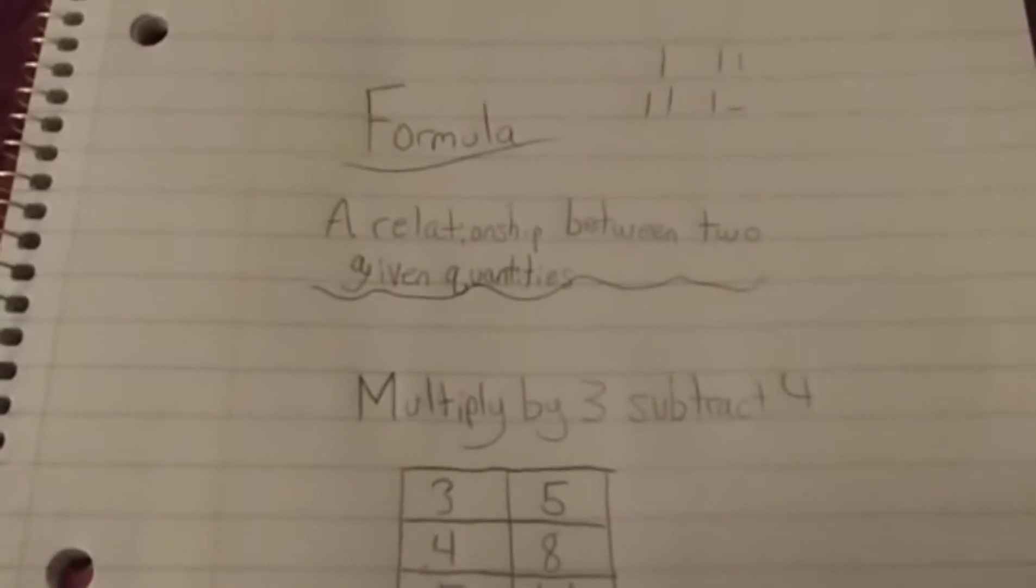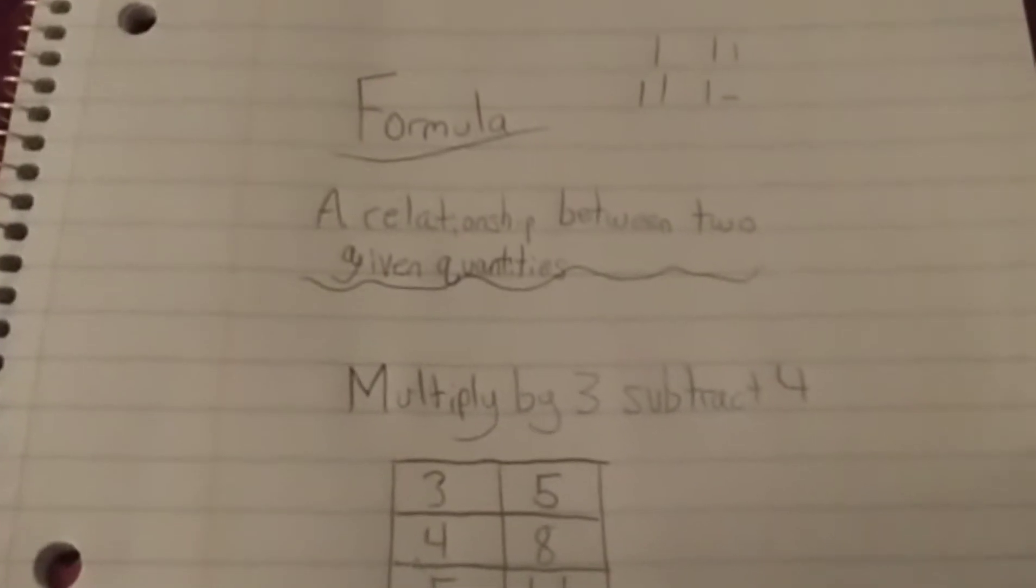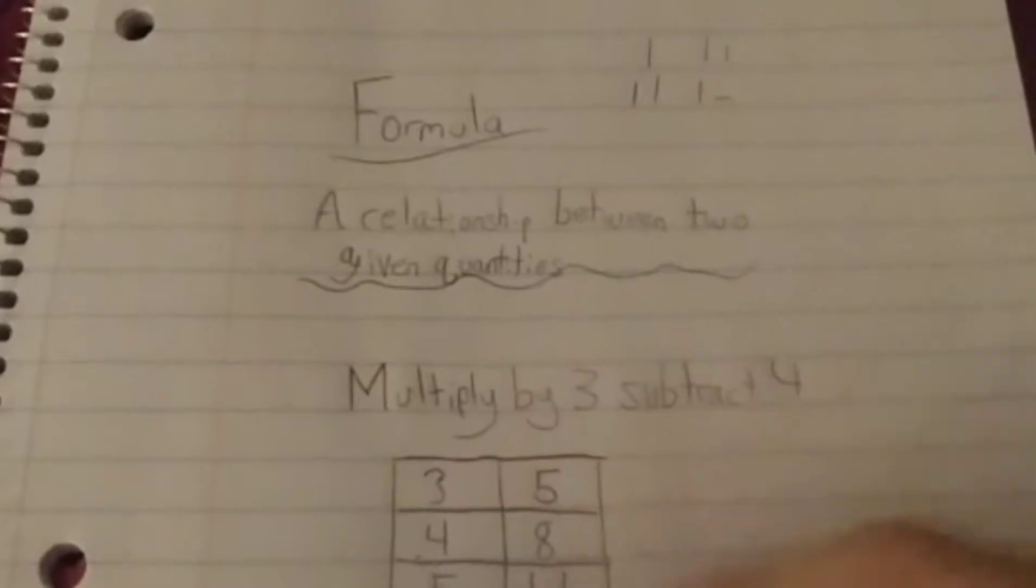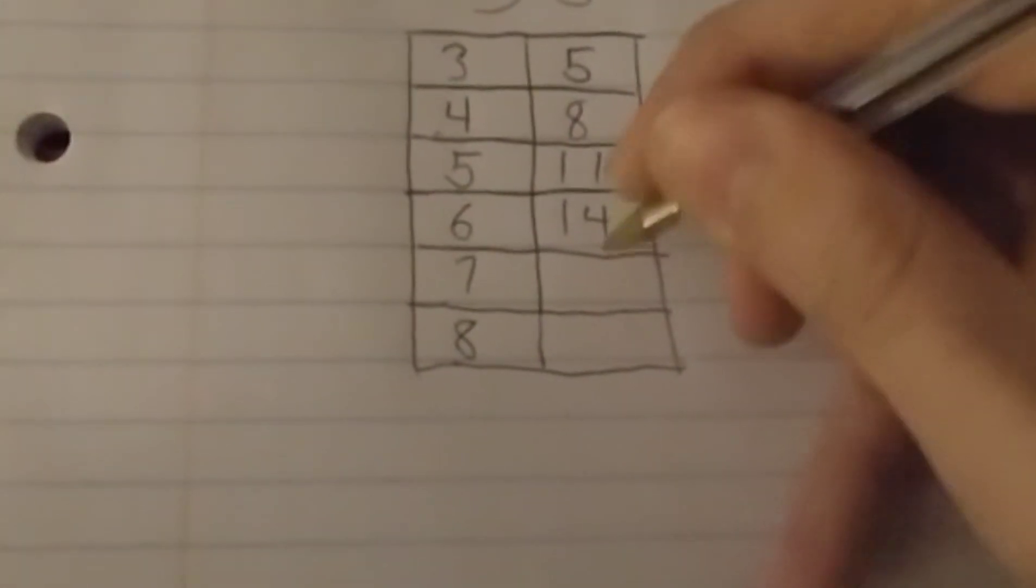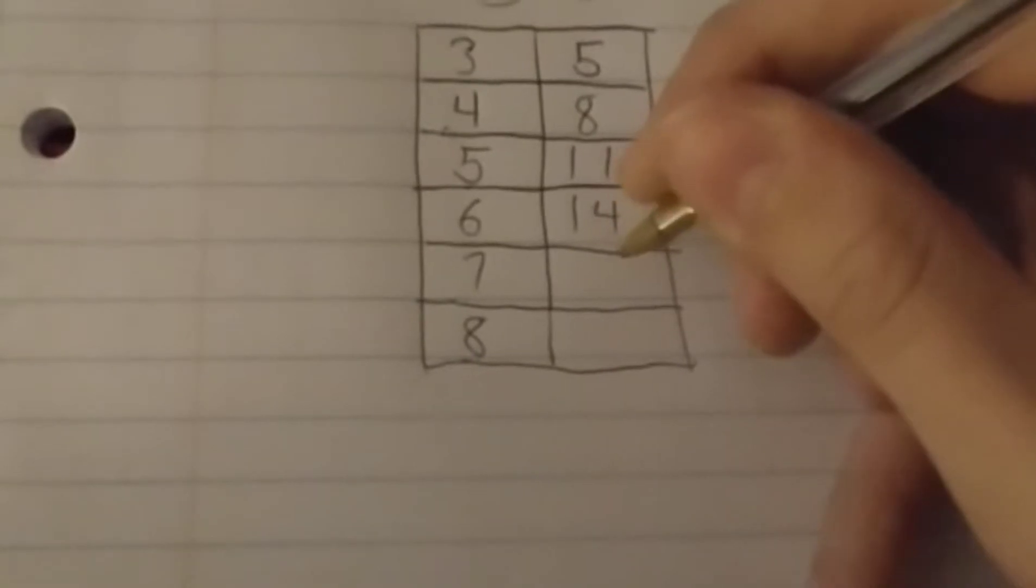So to find the output for 7, we just have to multiply by 3 and subtract 4. So 7 times 3 is 21, minus 4 is 17.